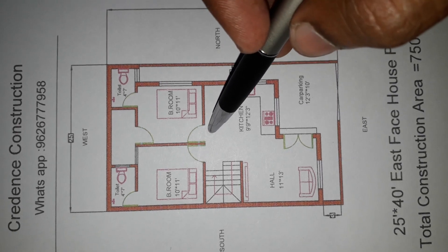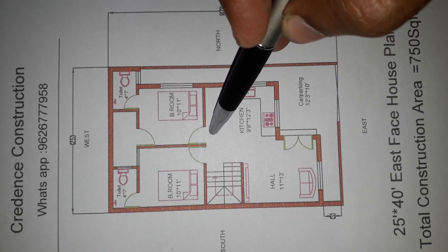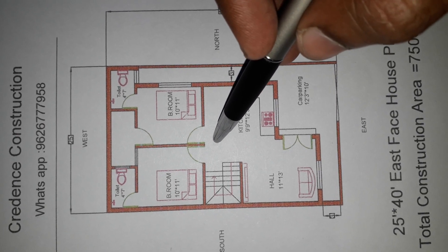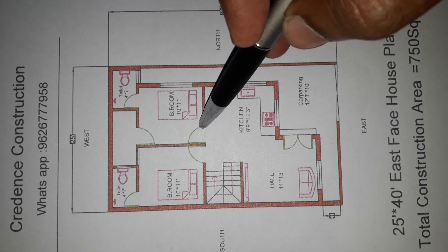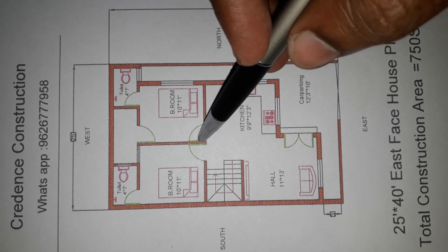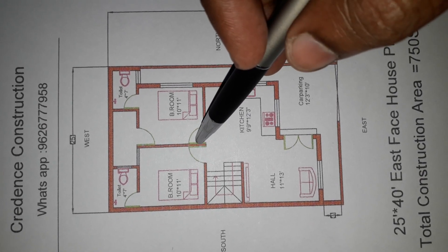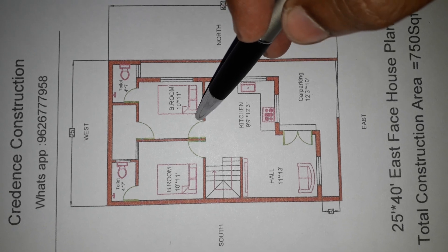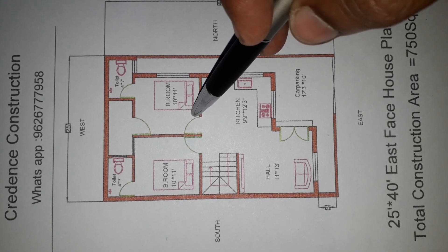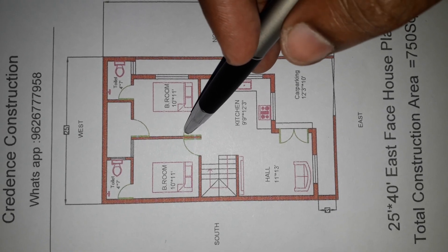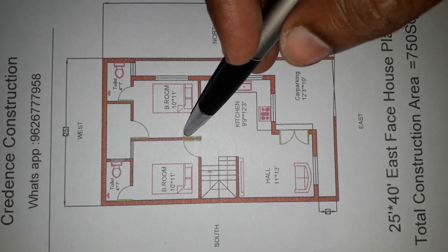Flush doors will be used throughout. The door size is 3 feet by 7 feet, with a frame of 4 feet. Doors are ready to use.